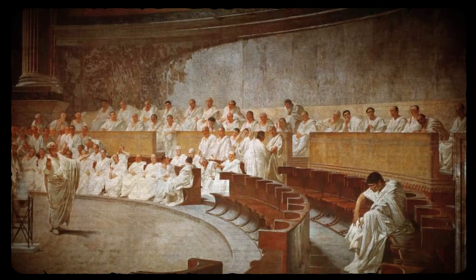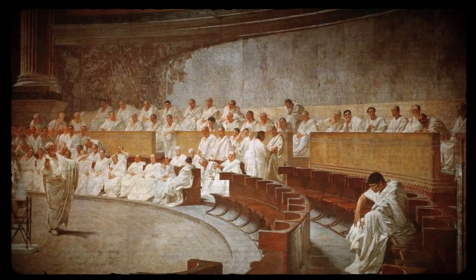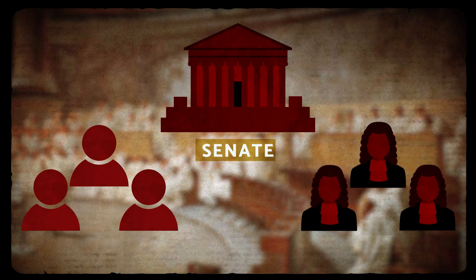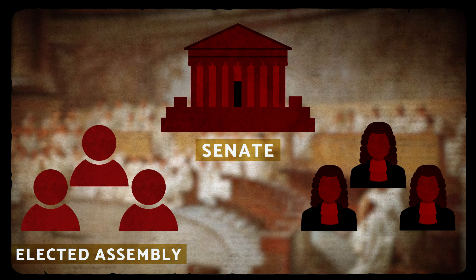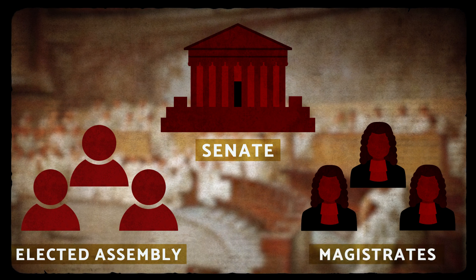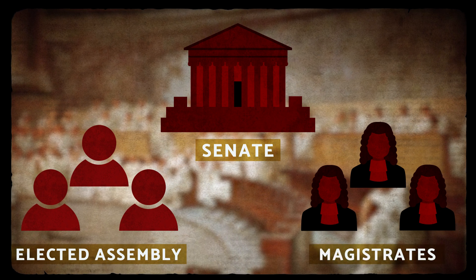So they set about decentralizing political power into various branches, to include a senate, elected popular assemblies, and magistrates who held veto power to defend the rights of the people. This elaborate system of checks and balances was upheld by the Roman constitution, which protected property rights and limited political power.